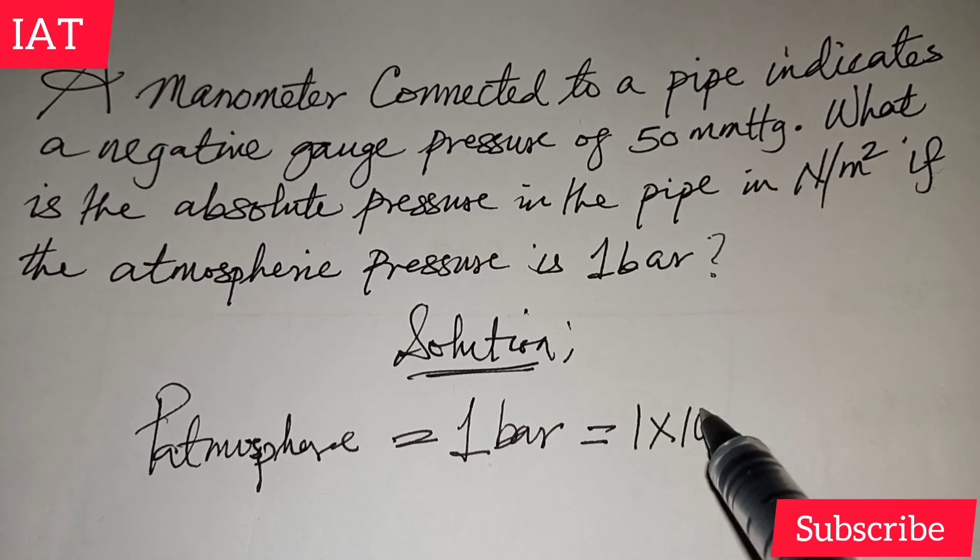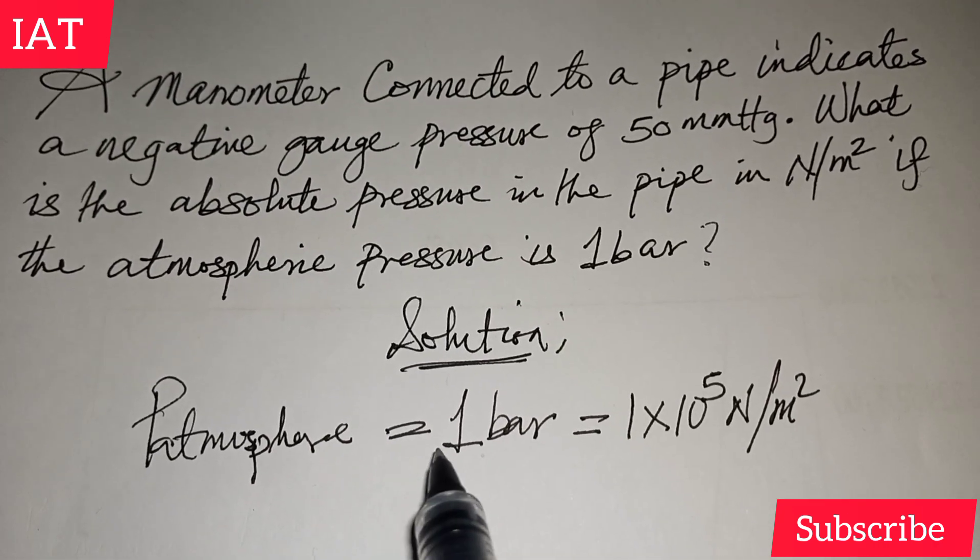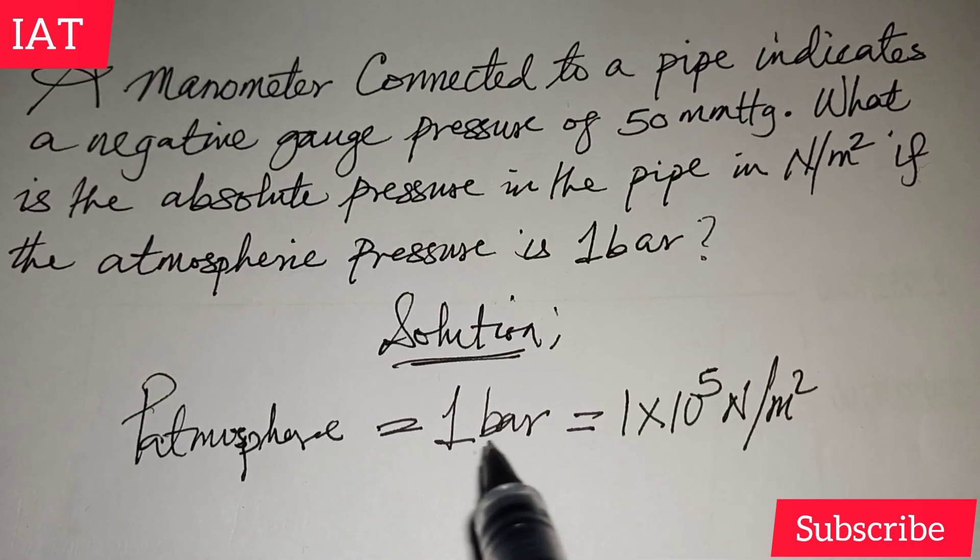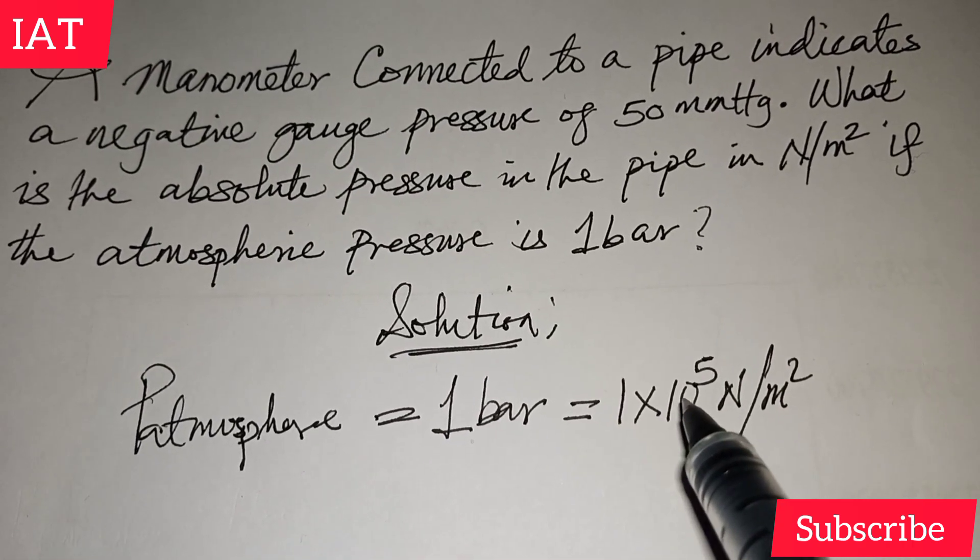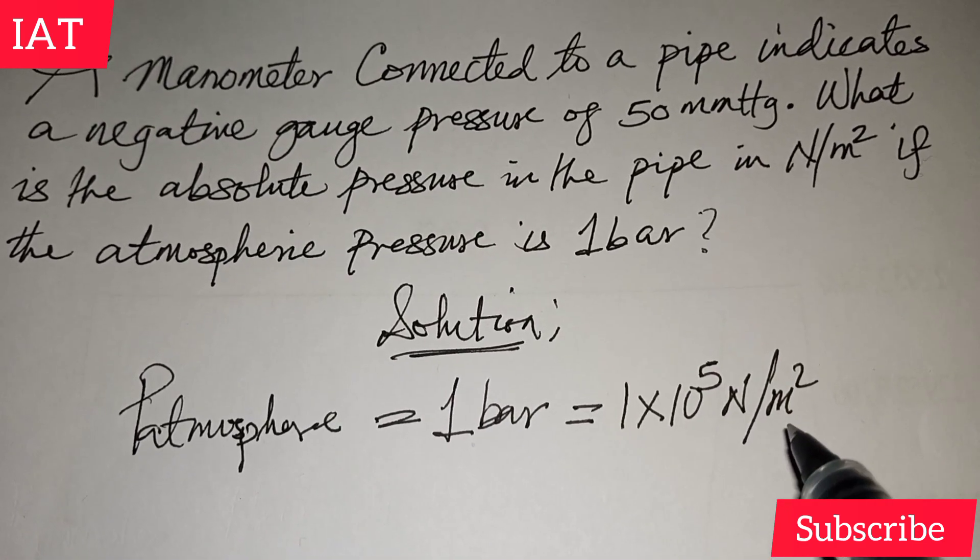And this one bar is equivalent to 1 × 10^5 Newton per meter square. So we've already done the conversion because one bar is equivalent to this. So this is the same thing as 10^5 Newton per meter square.